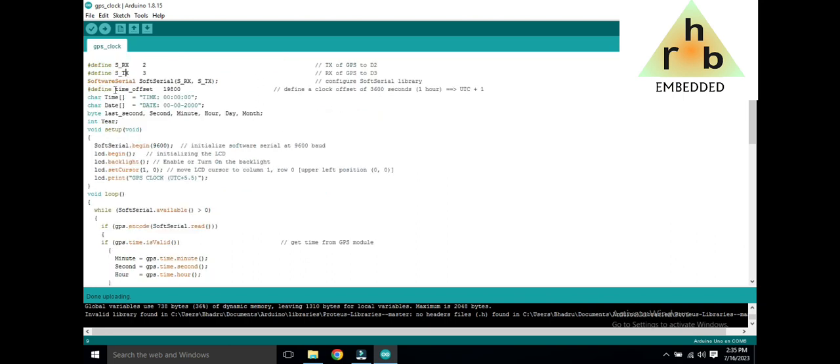Now comes the define time offset: 19,800. Because for each hour we are using 3,600 as a time offset. For India, the time difference from GMT is 5.5 hours, so 5.5 multiplied by 3,600 is 19,800. That's what we are using here.